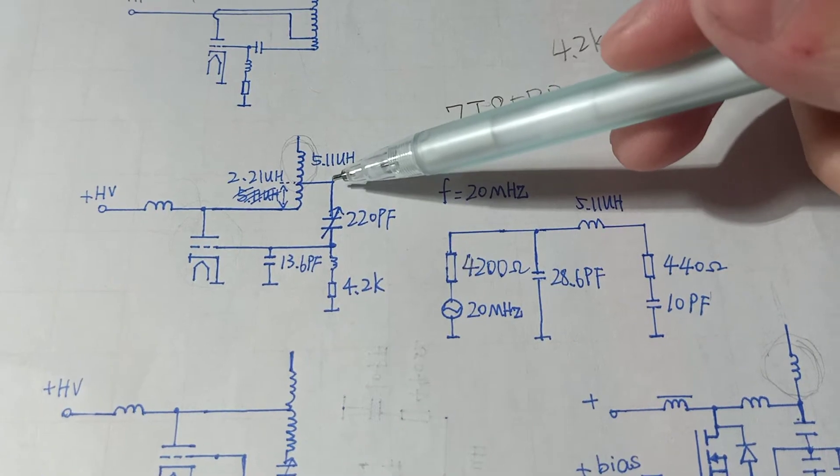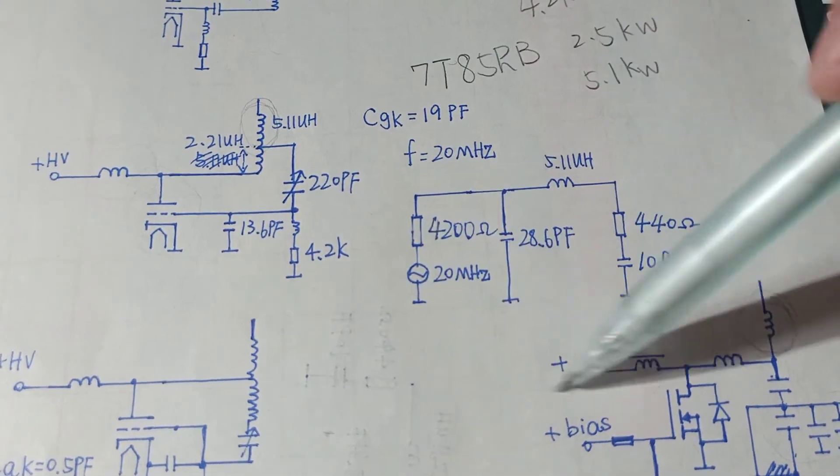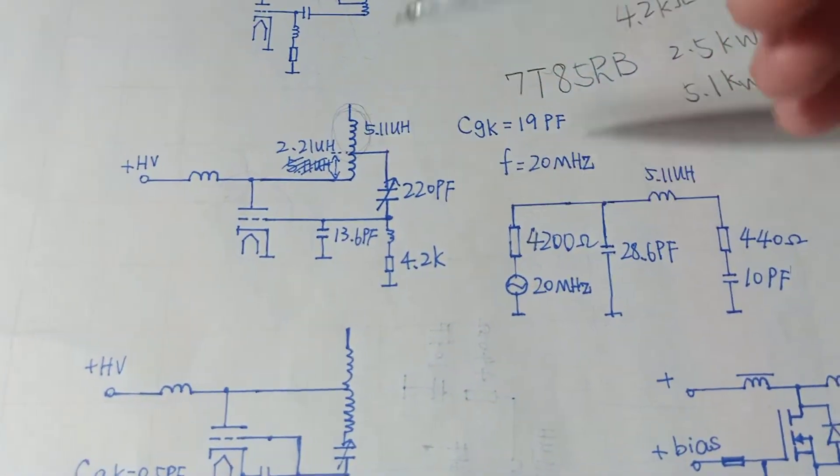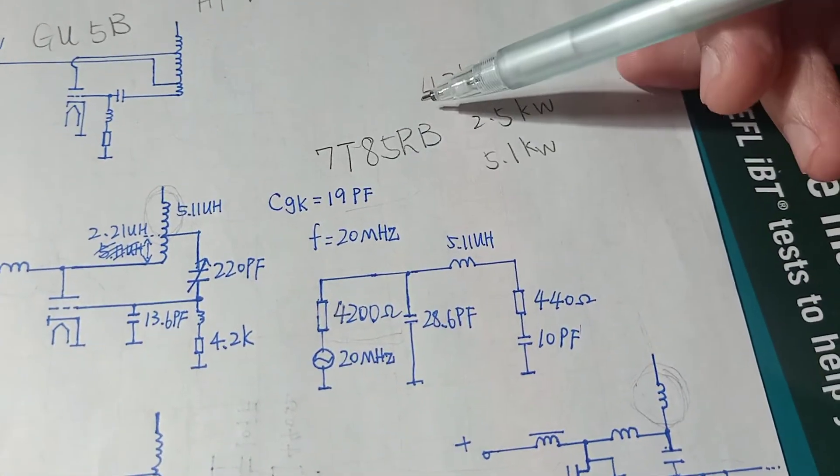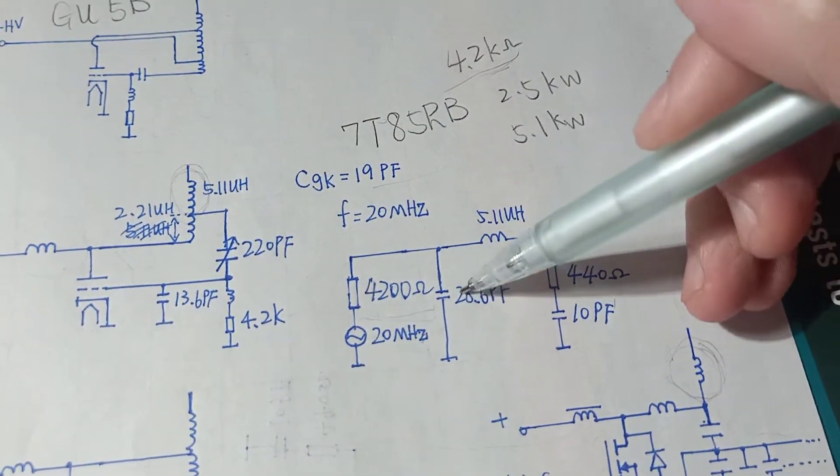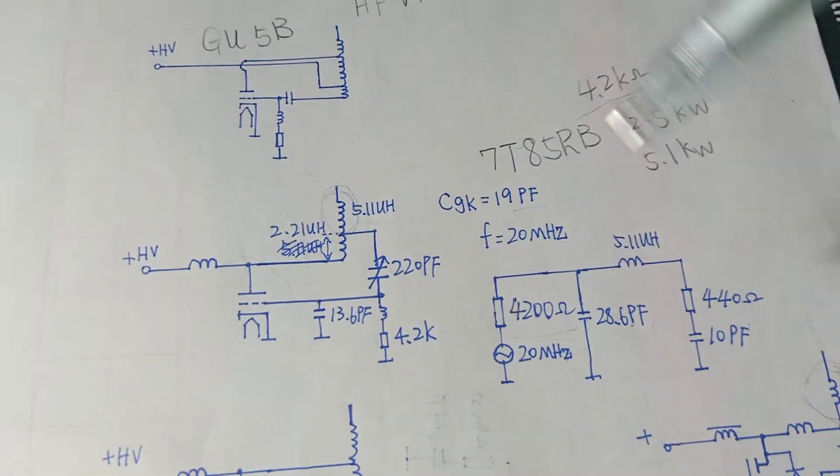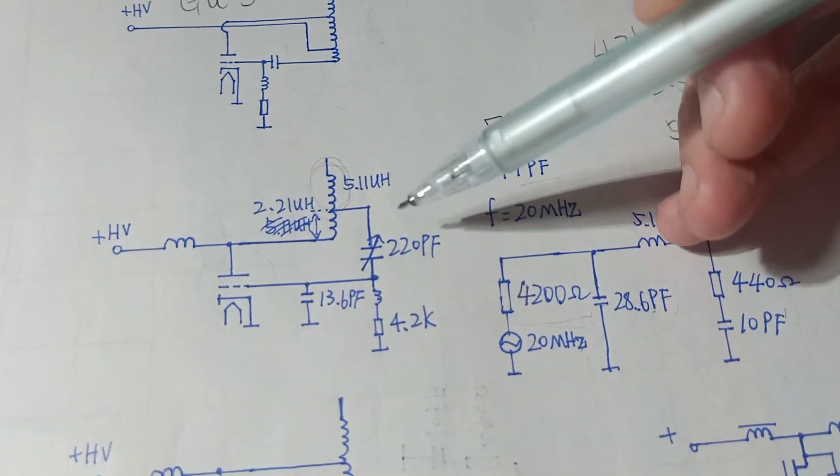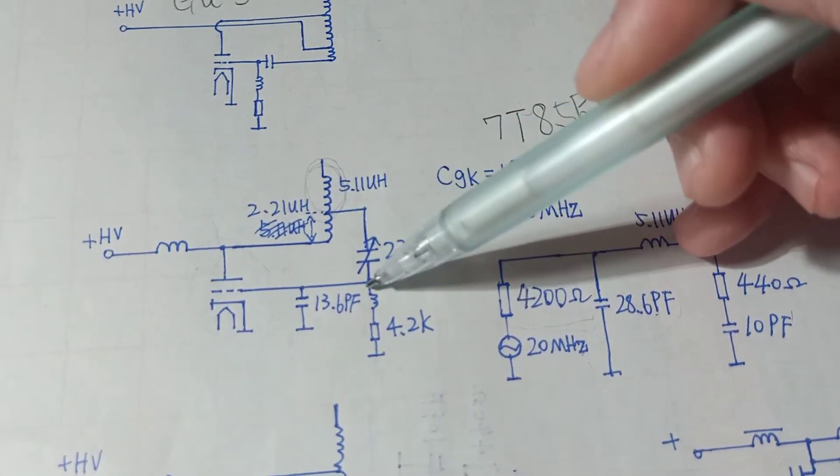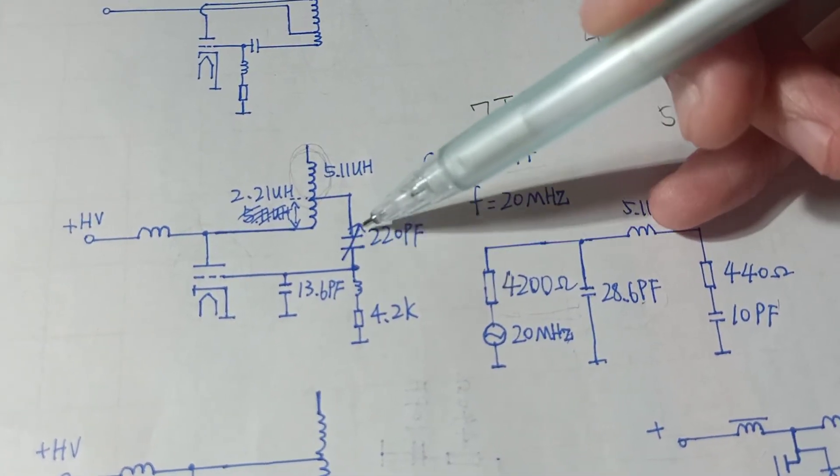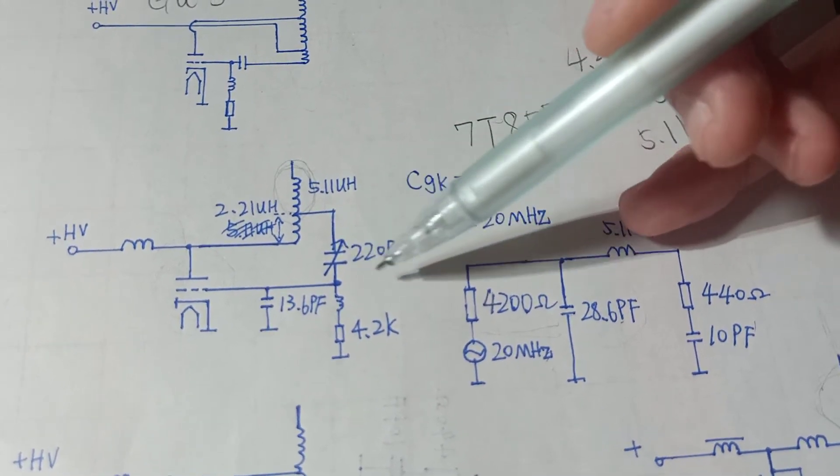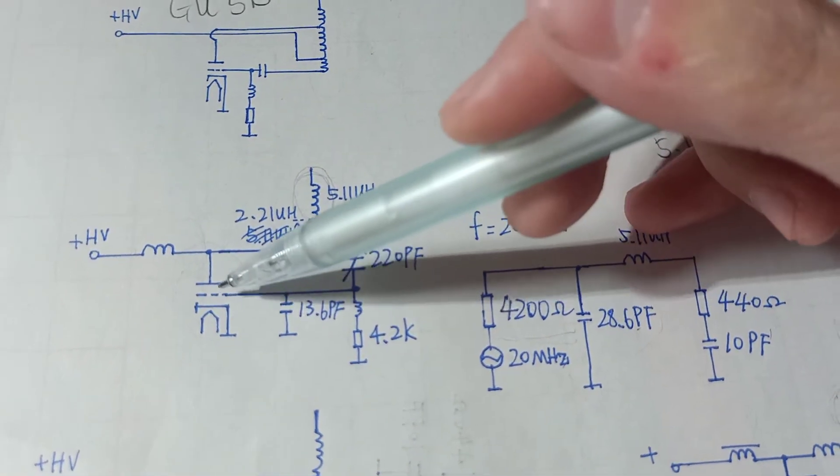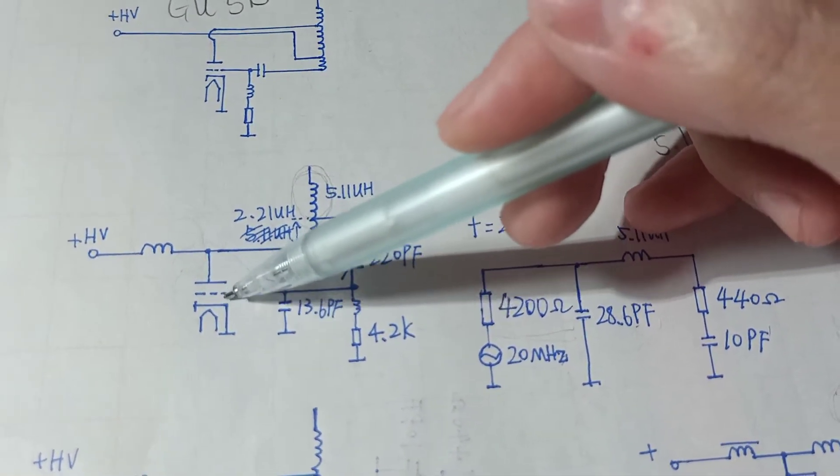The impedance of this tube is 4.2 kOhms. This one, we can simplify that circuit like this. I use the oscilloscope to measure the oscillating frequency at 20 MHz. And this is the tube's internal impedance. This capacitor here is actually the tank circuit capacitance, which equals to this 220pF capacitor.